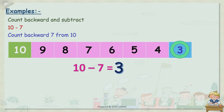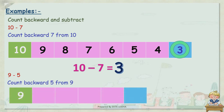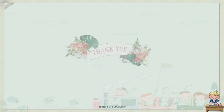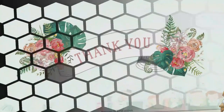Now kids, 9 minus 5. Count backward 5 from 9. Here 9 is written because 9 is the greater number. Kids, you have to try this sum at home — I know you all can do it. Great job. Thank you and bye!